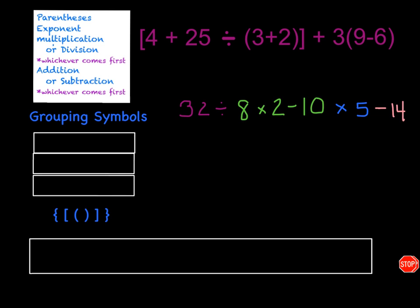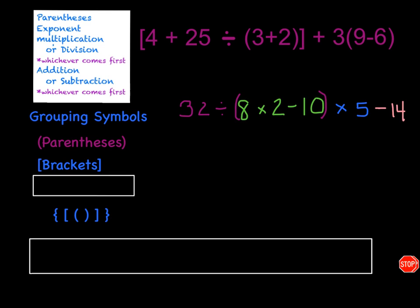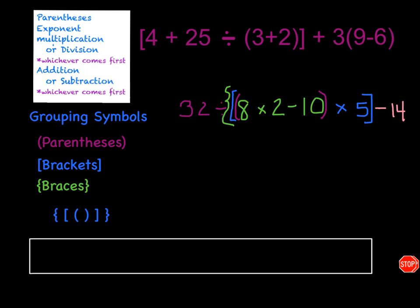So we have a few different options. The first option, as you know, are the parentheses. So if I wanted to solve this first, I'm going to put that on the innermost one. The second option are called brackets — they are shaped more like edged parentheses. So if I wanted to multiply by 5 next, that is where I would put the brackets. The final option is braces. So if I wanted to solve the minus 14 next, I would put the braces on the outside. And as you can see, there's an example down here of the order that they follow.